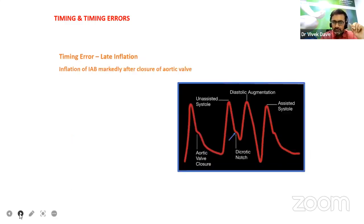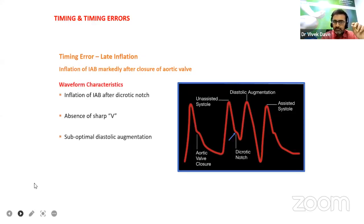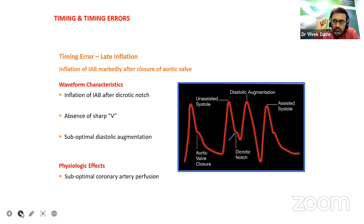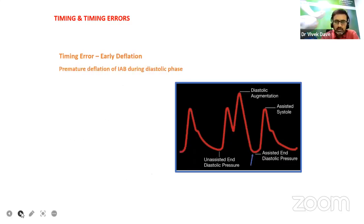When there is late inflation — inflation of IABP markedly after closure of the aortic valve — it gives rise to inflation after the dicrotic notch, absence of sharp V, and suboptimal diastolic augmentation, resulting in suboptimal coronary artery perfusion. The positioning of the balloon pump is very important. If it is properly placed — just distal to the subclavian artery — and inflation and deflation are properly addressed, then these things will be well under control.